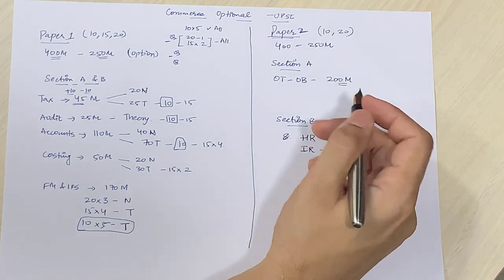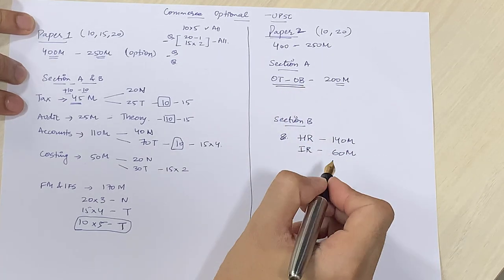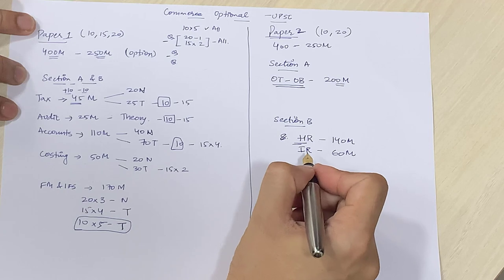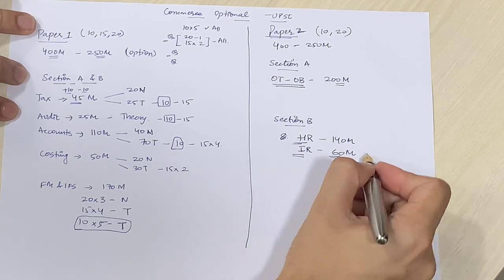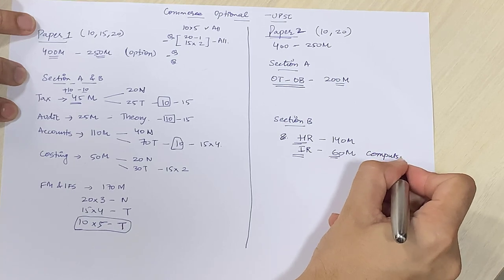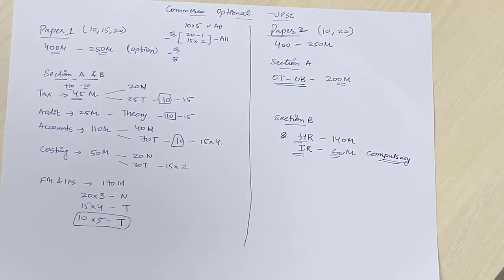Yehaan per kaafi simple hai because you know that you have to cover the entire organization theory and organization behavior very extensively. Similarly, you have to cover HR at least very extensively and not ignore IR kyunki is mein kuch compulsory questions bhi hota hai. Das number wale. And therefore, you can lose a lot of marks if you are not prepared well for IR.